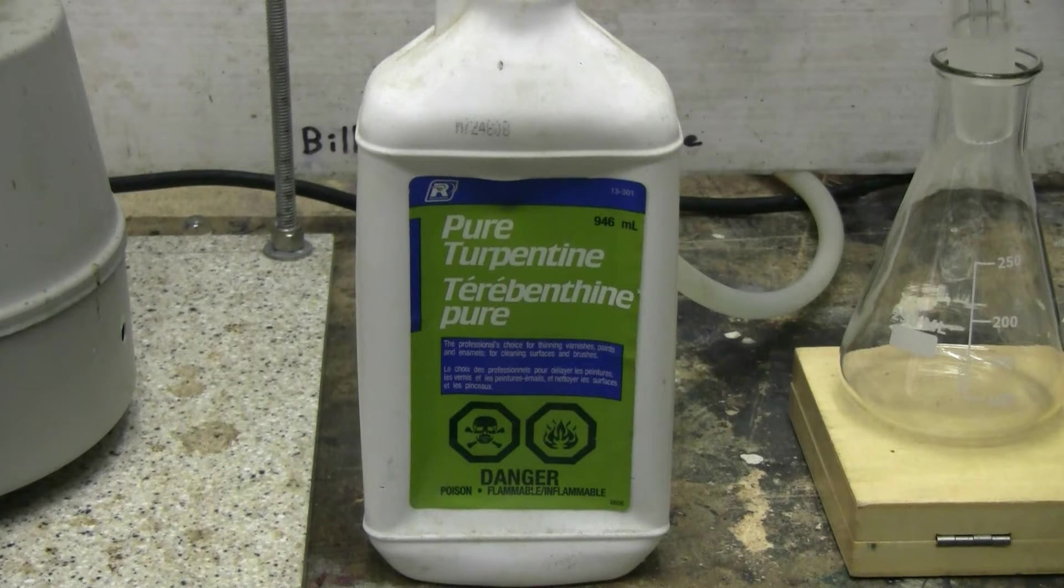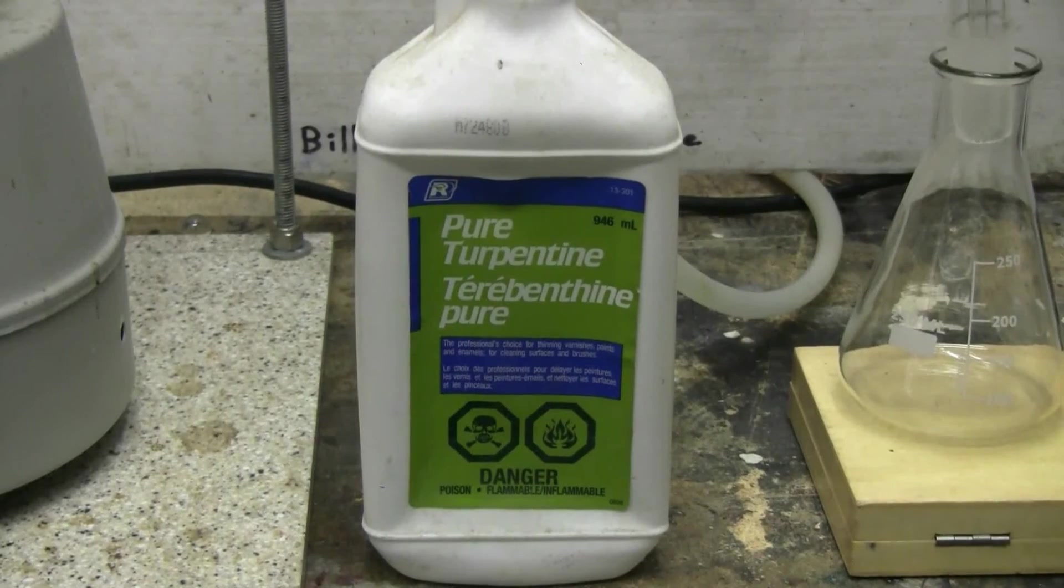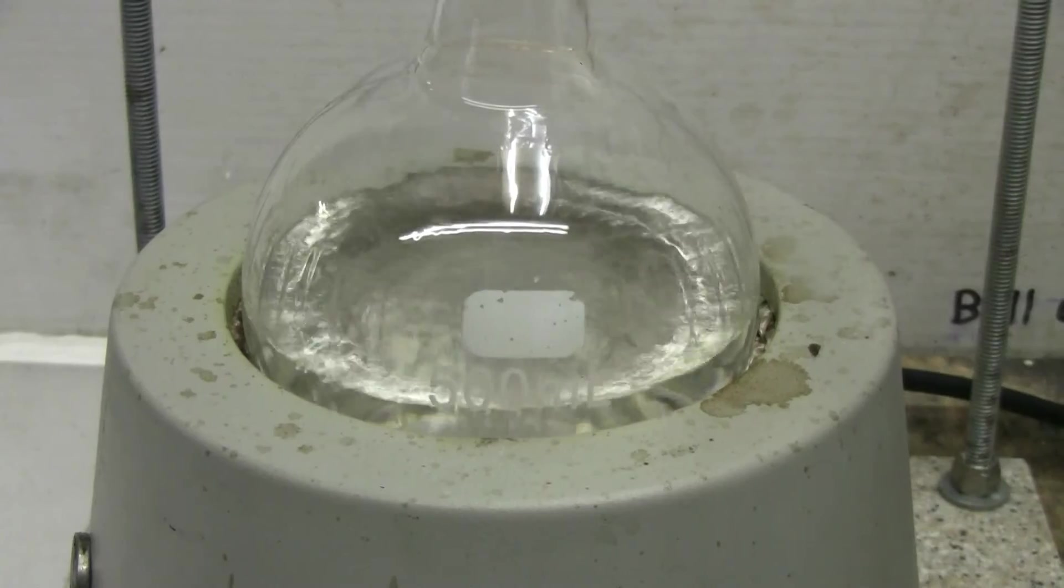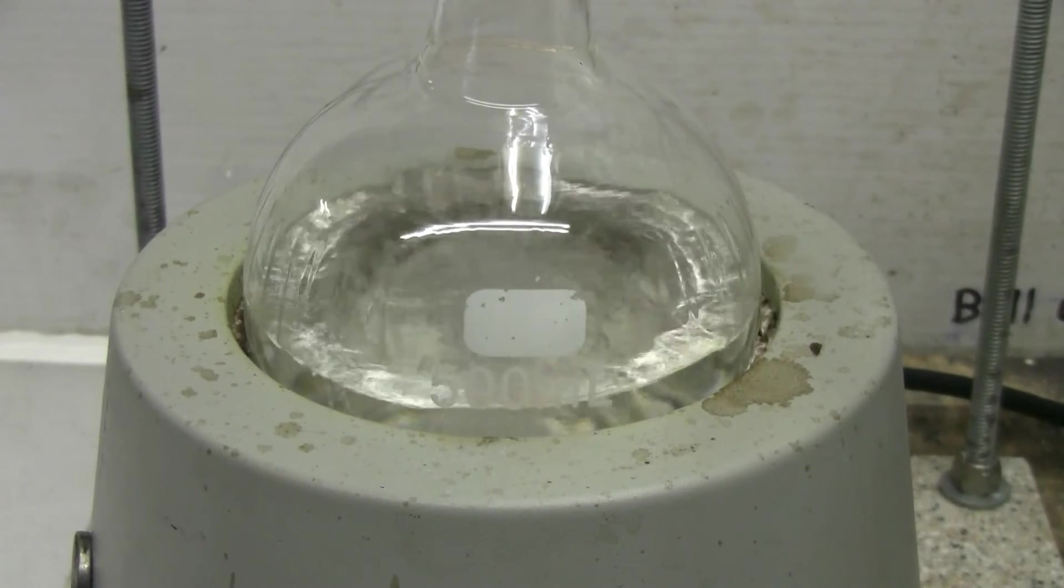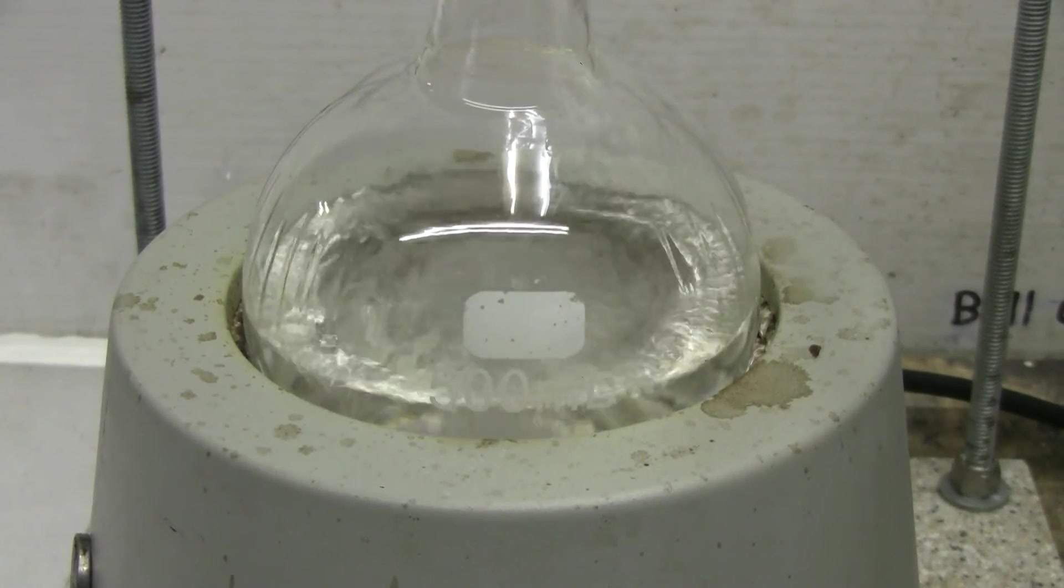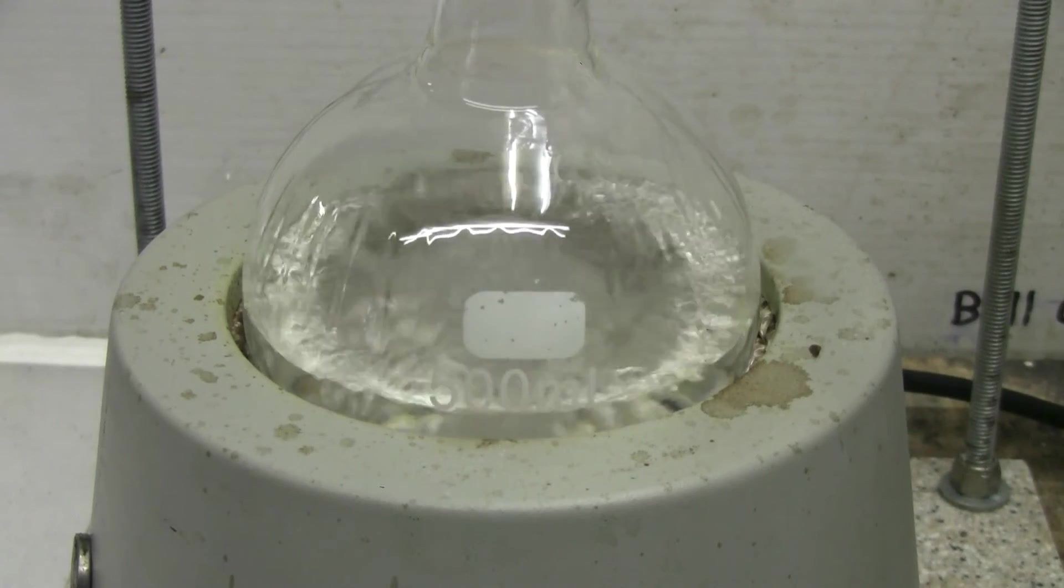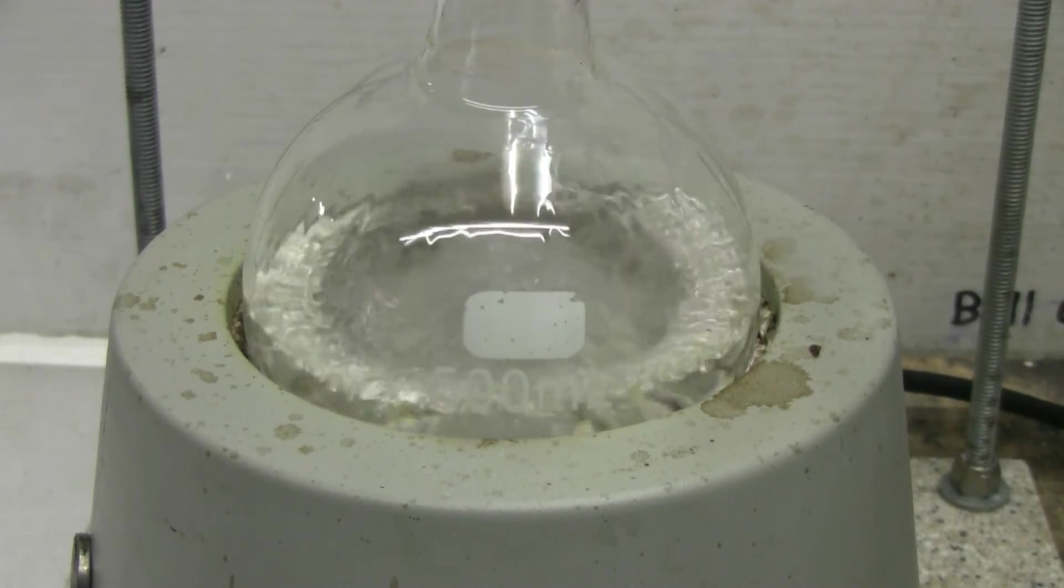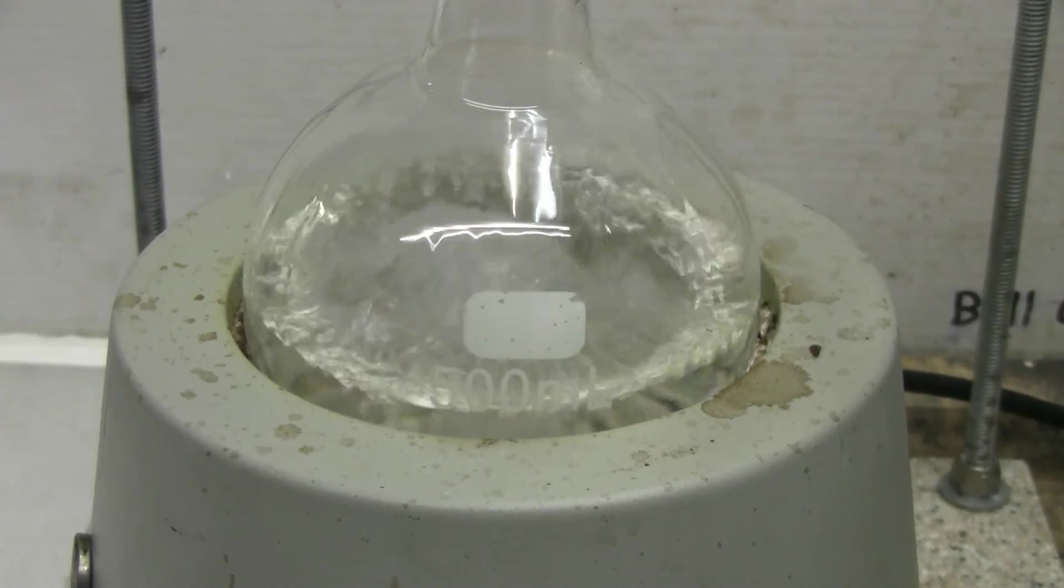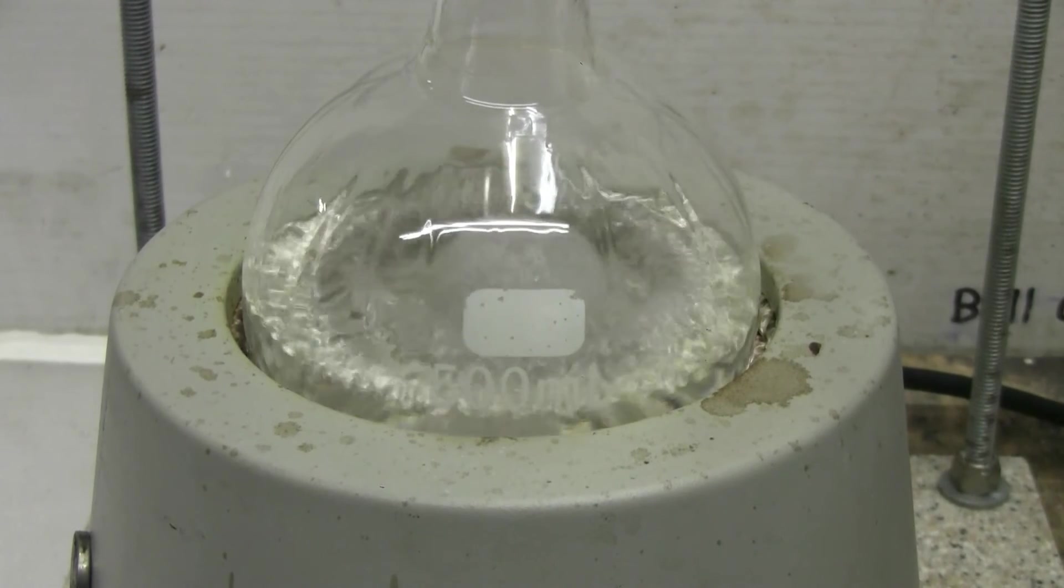Let's see if we can separate off a little alpha-pinene here. I have about 250 milliliters of turpentine in this 500 milliliter boiling flask and it's just beginning to come up to heat, although nothing is distilling over yet. I'll pick up the video when something starts to happen.